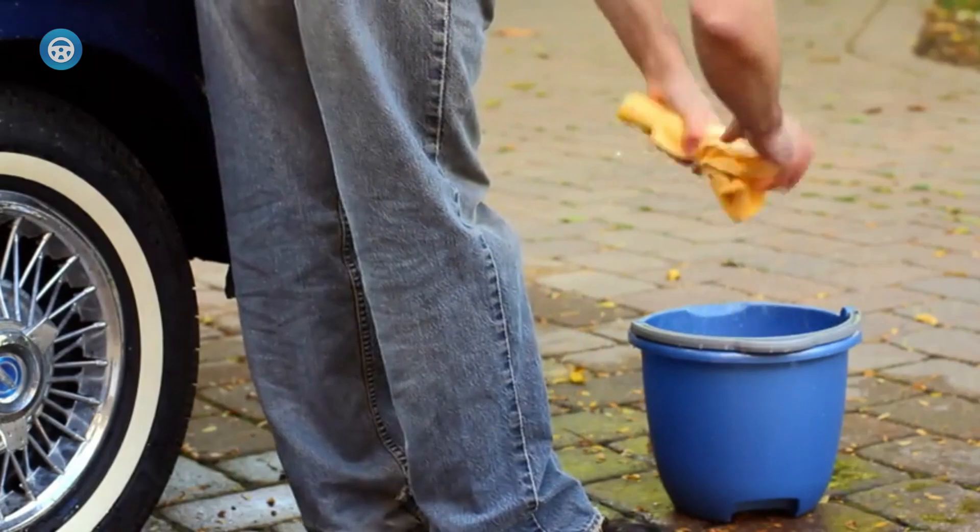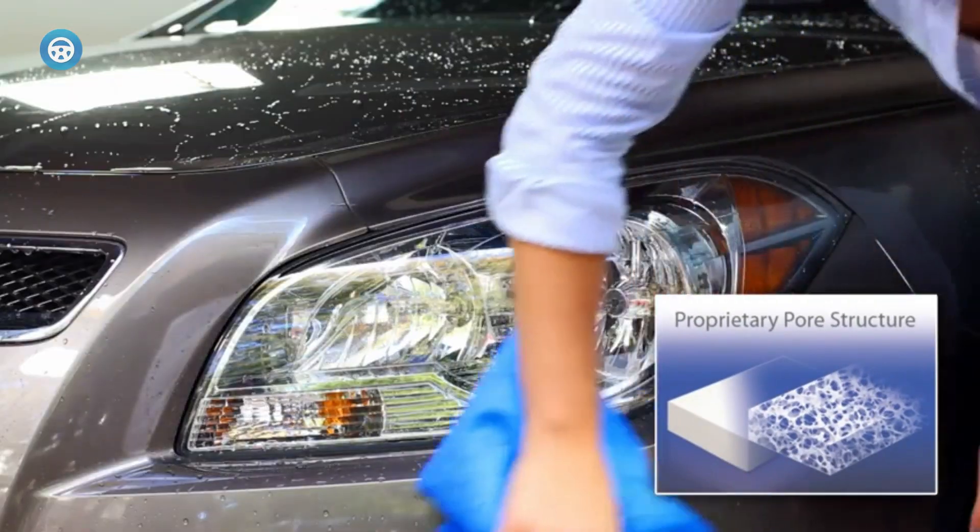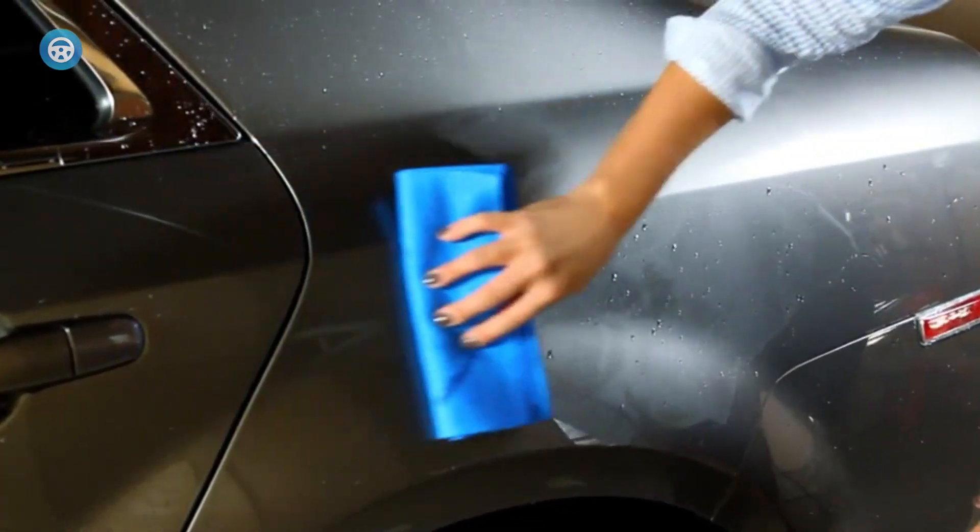A chamois quickly absorbs water from the car's body, eliminating the risk of unsightly spots that would have been left behind if the water was left to dry on its own.